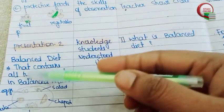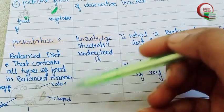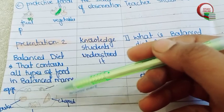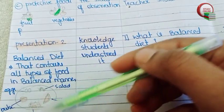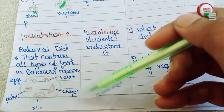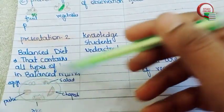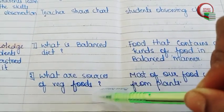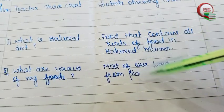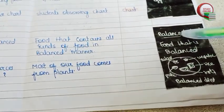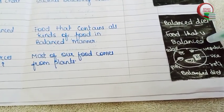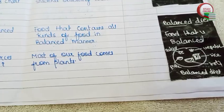In Presentation 2, we teach students about balanced diet. Here you can see we can draw a diagram and also carry a chart of balanced diet. Foods like eggs, pulses, rice, chapati, and salad all come under balanced diet. Questions related to this: What is balanced diet? What are the sources of vegetarian food? Here is the expected answer from students. I have written the definition of balanced diet, blackboard work, and drawn the diagram as well.